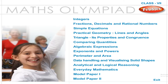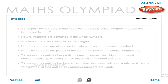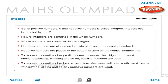Maths Olympiad Class 7 — Integers. The set of positive numbers, 0, and negative numbers is called integers. The integer set is denoted by I or Z. Natural numbers are contained in the whole numbers, and whole numbers are contained in the integers.